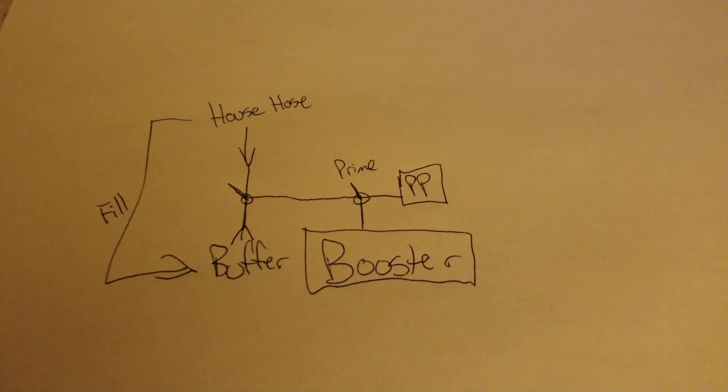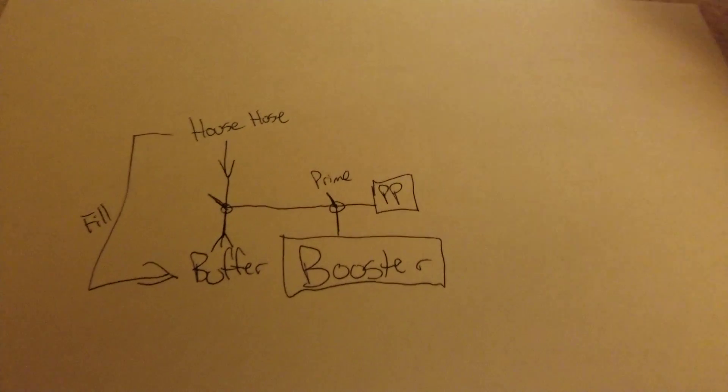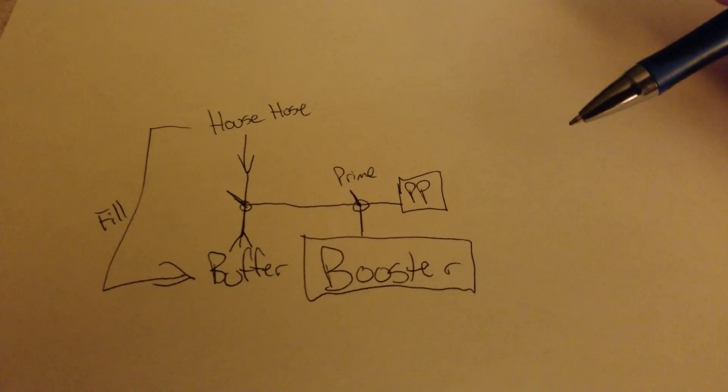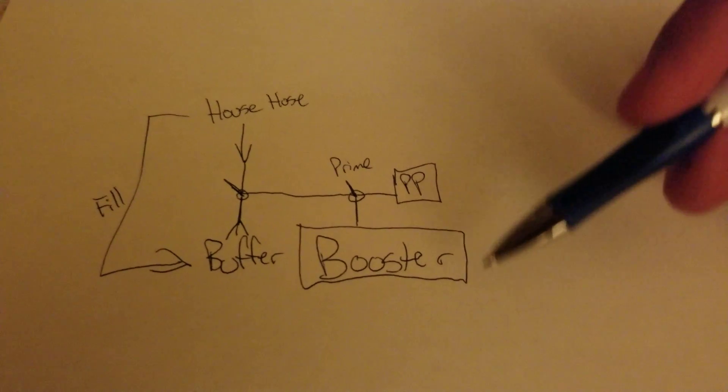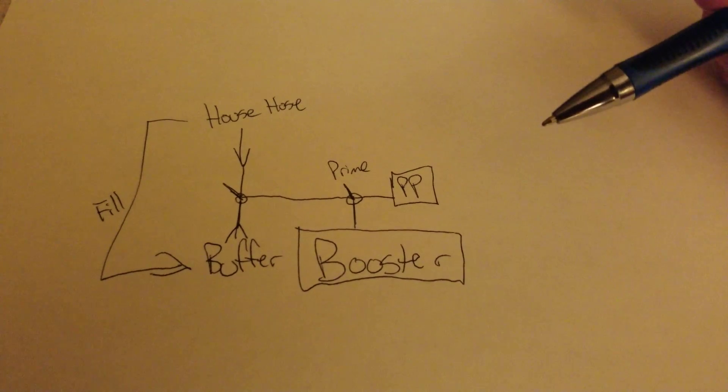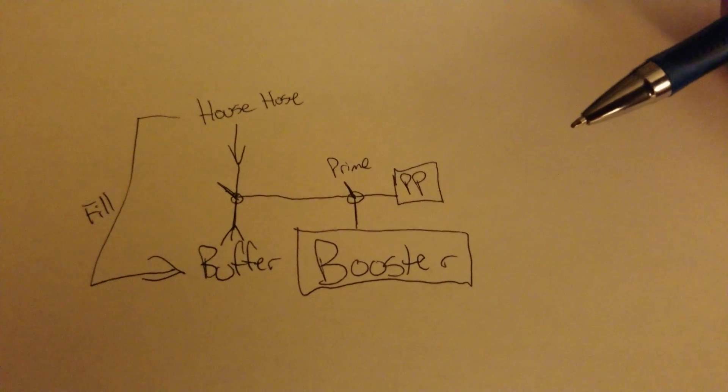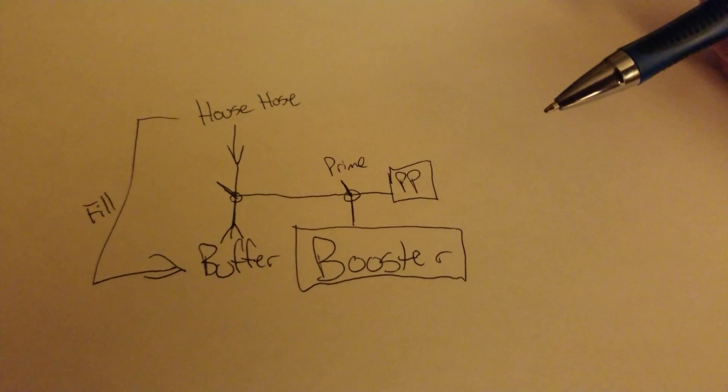Just a quick basic drawing to show you - and I've made a video of it actually in practice - but somebody was asking how can you set up a booster and proportioner system to prime when you don't have pressure from the house.